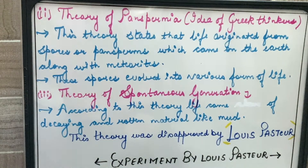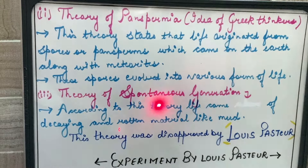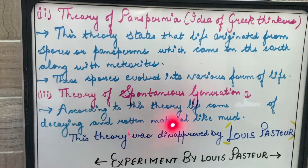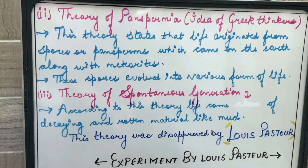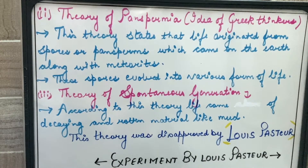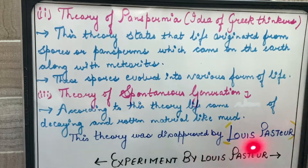The third theory of evolution is the theory of spontaneous generation. According to this theory, life came out of decaying and rotten material like mud or soil. A very important question asked from this theory is: which scientist disapproved it? This theory was disapproved by Louis Pasteur.